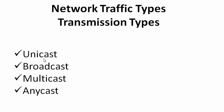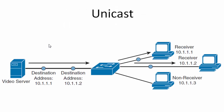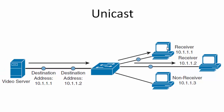There are four traffic types: unicast, broadcast, multicast, and anycast. Unicast means that traffic travels from a single source device to a single destination device. Look at this diagram — if the video server wants to send a packet to this device only, this type of transmission is called unicast. So unicast is one-to-one transmission.